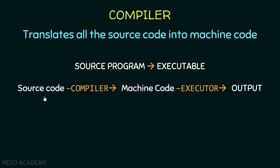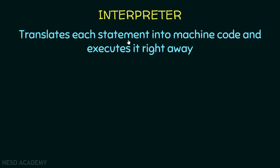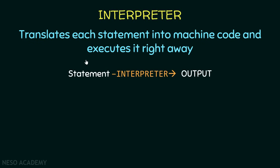The compiler converts all the source code to machine code, and then we execute it using an executor to see the output. Now let's look at the interpreter — it works a little differently. An interpreter translates each statement into machine code and executes it right away, rather than translating the entire program at once. It translates one statement at a time: a statement is translated to machine code, then executed to show output, and this is done for all statements in the program one by one. The key difference is that the compiler translates the entire program into machine code, while the interpreter translates and executes statement by statement.